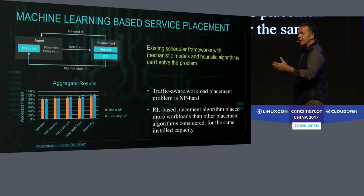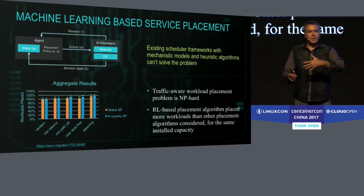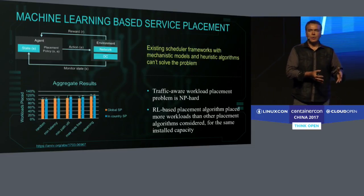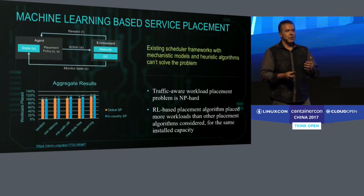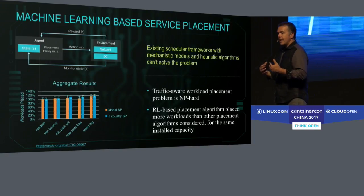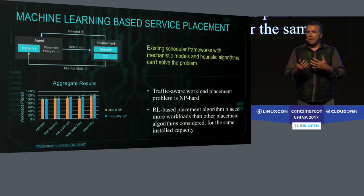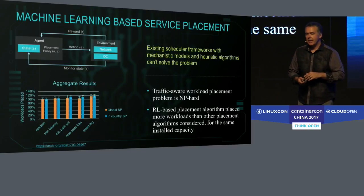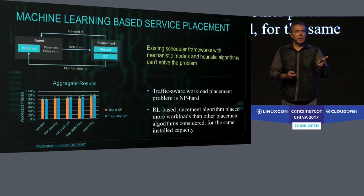On top of Panda, we've used machine learning algorithms. We've realized that mechanistic models of the network, compute, storage, and security are impossible to create with any accuracy. So stochastic and differential machine learning algorithms — which observe and analyze how the relationships of applications are occurring and include traffic awareness into the analytics — are optimizing the placement of those workloads. We're seeing up to 30 percent gain in efficiency of data center equipment, whether it's a CORD architecture or an enterprise application architecture.